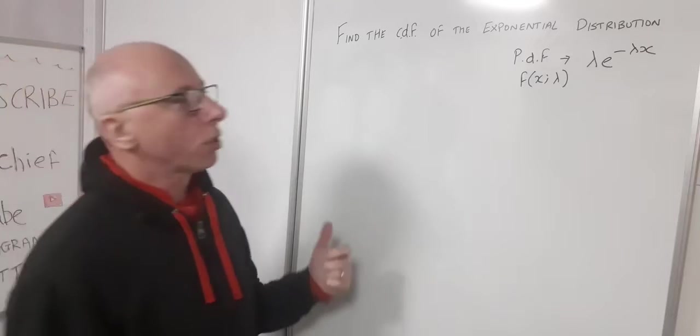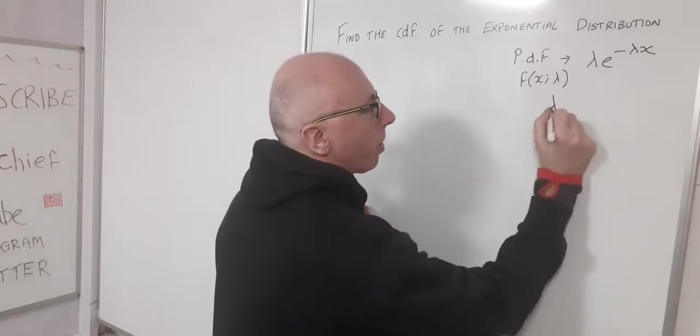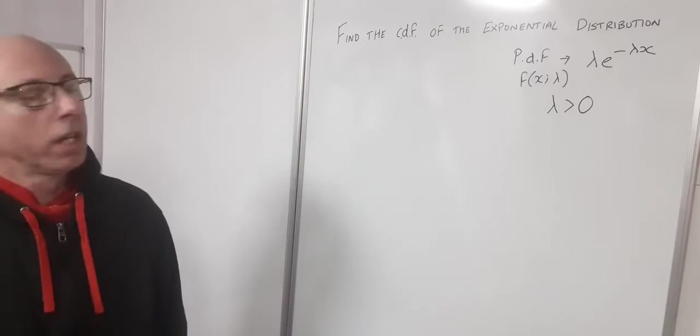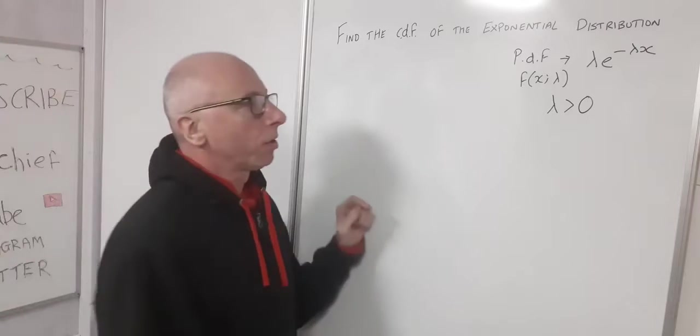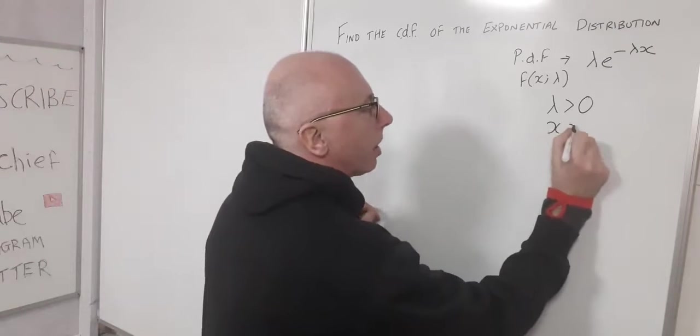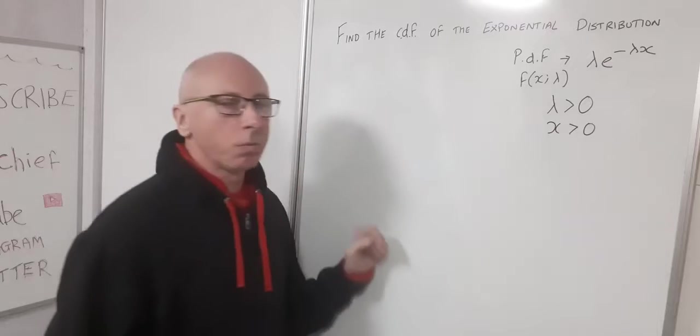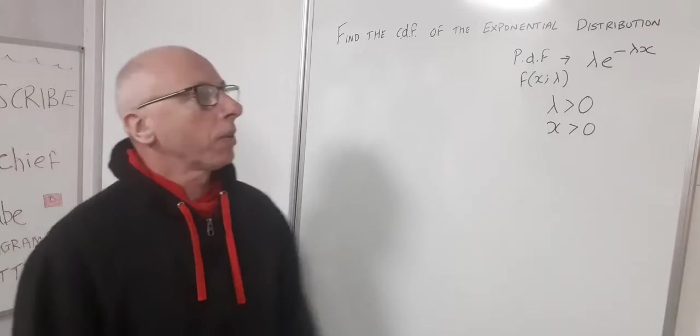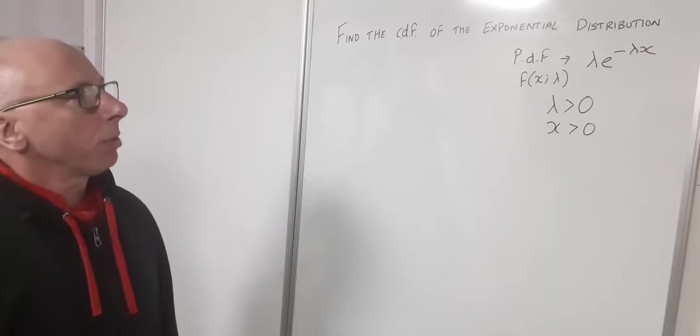Now lambda is always greater than zero. That's one thing we know about the exponential distribution. And x is also greater than zero. So there's no values of x which are zero or less. So that's what we've got so far for the exponential distribution.